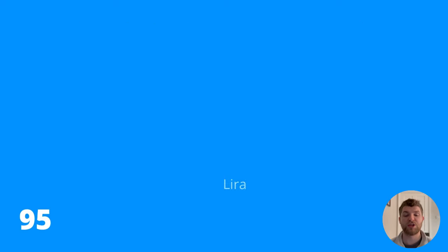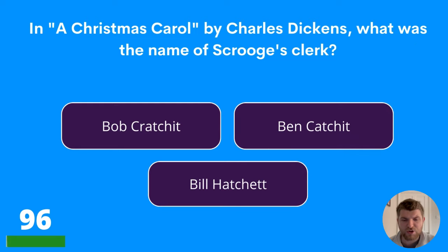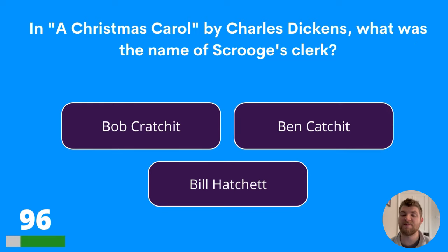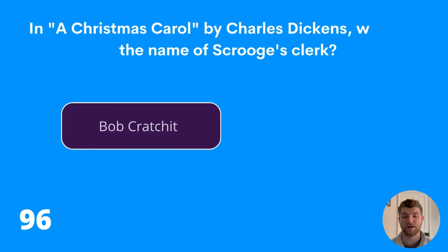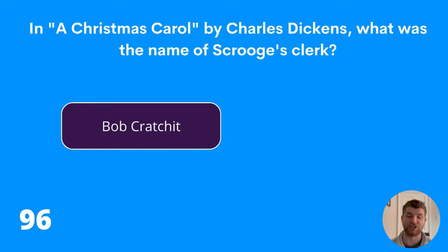Question ninety-six: in A Christmas Carol by Charles Dickens, what was the name of Scrooge's clerk? Bob Cratchit, Ben Catchet, or Bill Hatchett? The answer is Bob Cratchit.